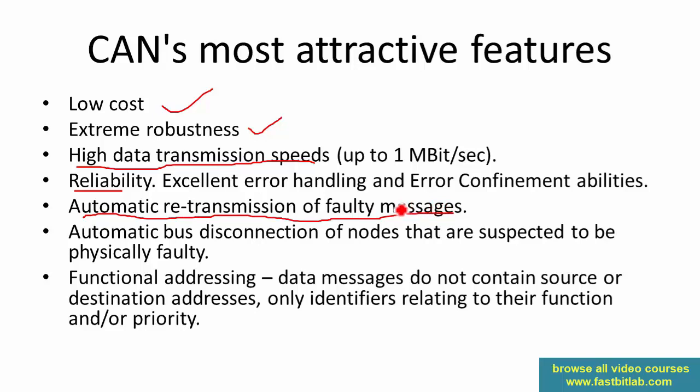CAN also supports automatic retransmission of faulty messages — the CAN transmitter can understand that a transmission didn't go well and retransmit automatically. Additionally, there is automatic bus disconnection of nodes that are suspected to be physically faulty. Physically faulty nodes can disturb the network by flooding it with error frames and causing problems to nearby nodes. That is why the CAN specification includes something called Auto Bus-Off, which is the automatic disconnection of faulty nodes — and the controller has the intelligence to go off the CAN bus whenever it is malfunctioning.